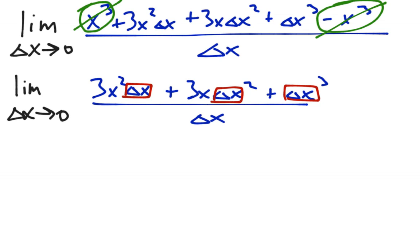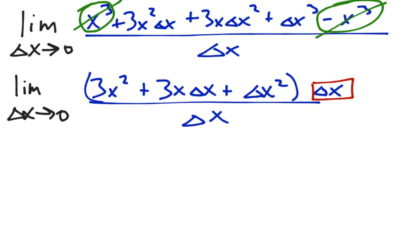So you can imagine factoring out delta x out of all of these, like this. So I took the delta x in the red box out of all three terms. And then, very nicely, these two cancel. And this is perfect, because now we don't have that zero in the denominator anymore.